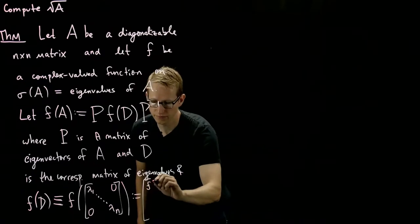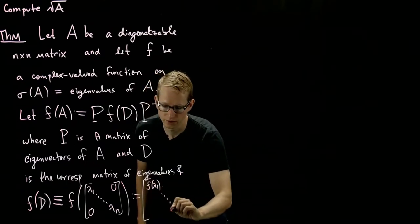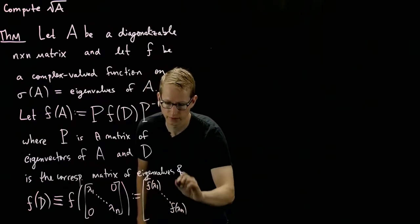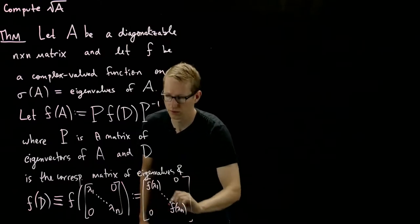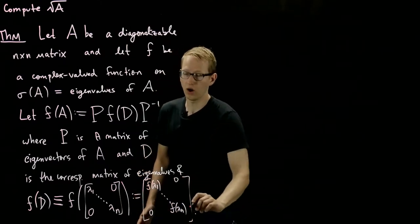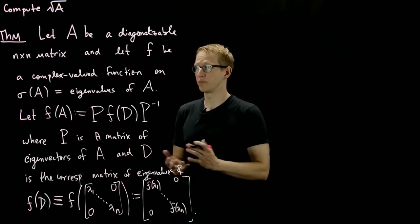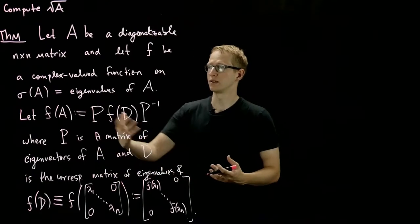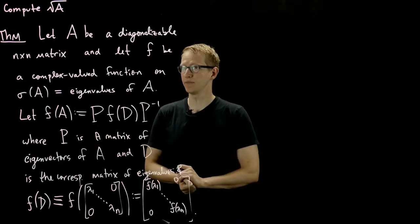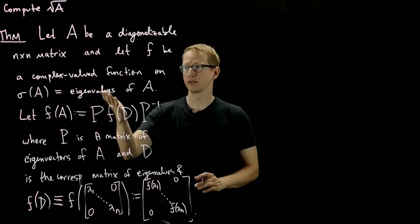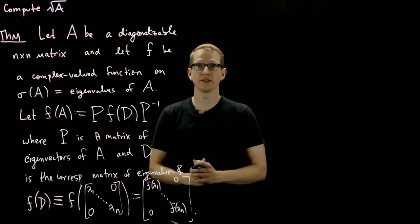So this is F(λ₁), F(λₙ), and 0 everywhere else. So far, all we've done is set up our assumptions. We have a matrix, we have eigenvalues, we can define F applied to A, provided that we have a complex-valued function defined on the set of eigenvalues.